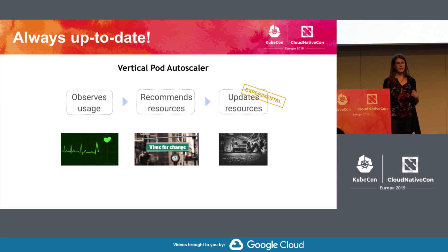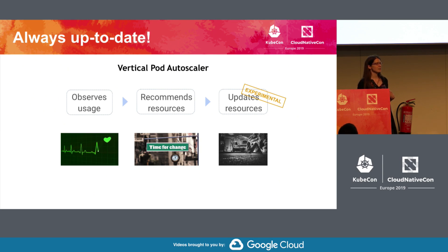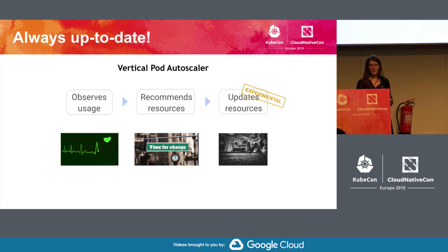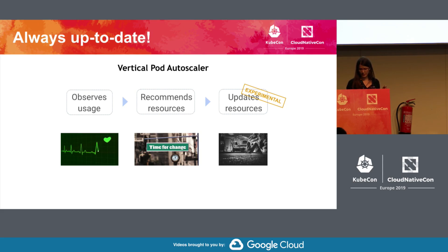What Vertical Pod Autoscaler does is the thing that the scheduler doesn't: it takes into account your actual usage, not only resource requests. So it watches the usage, and based on that it recommends the resources that your workloads should be requesting, and optionally — if you configure it to do so — it can update those resources. But this is the tricky part, marked as experimental, and I will explain why that experimental mark is there in just a minute.